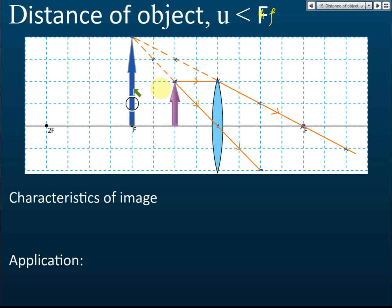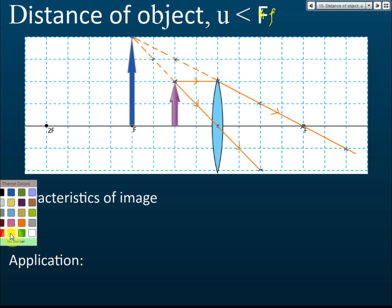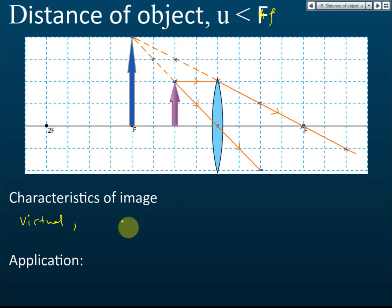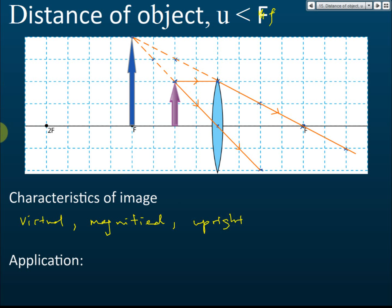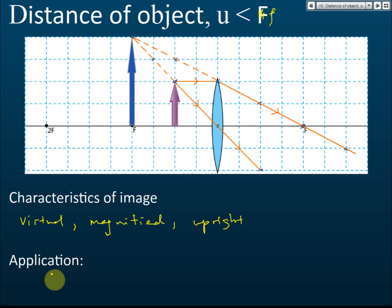If the image is on the same side as the object, it is not real — it is virtual. If the image were on the other side of the object, it would be real. Here the image is on the same side as the object, so the image is virtual. It is also bigger than the object, so it is magnified. And it is upright — not inverted. So the characteristics of the image are: virtual, magnified, and upright.